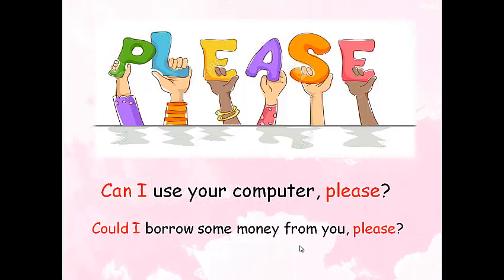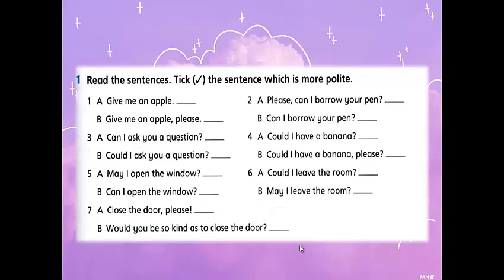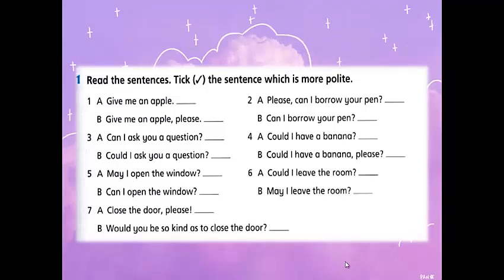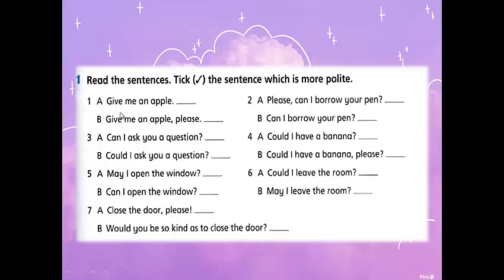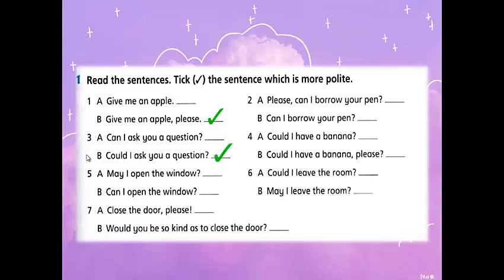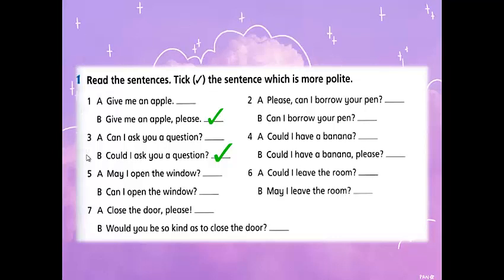Now please open your workbook on page 65 and let's do the exercises. Exercise number one: read the sentences and pick the one that is more polite. Number one: (a) 'Give me an apple' or (b) 'Give me an apple please' — excellent, (b) is more polite. Next: (a) 'Can I ask you a question?' or (b) 'Could I ask you a question?' — (b) is correct. Then: (a) 'May I open the window?' or (b) 'Can I open the window?' — 'may' is more polite. Number seven: (a) 'Close the door please' or (b) 'Would you be so kind as to close the door?' — excellent.